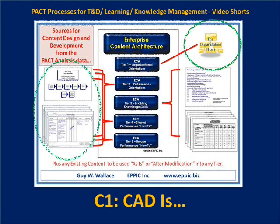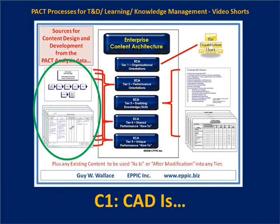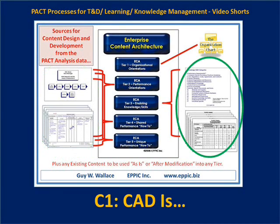In tier two, there's a deeper dive done in tier two performance orientations. These are the equivalent of advanced organizers that don't teach how to do the job, but demystify it thoroughly. Tier three content are the enabling knowledge and skills — things like laws, regulations and codes, policies and procedures, tools and equipment, and interpersonal and personal development skills that are enablers of terminal performance.